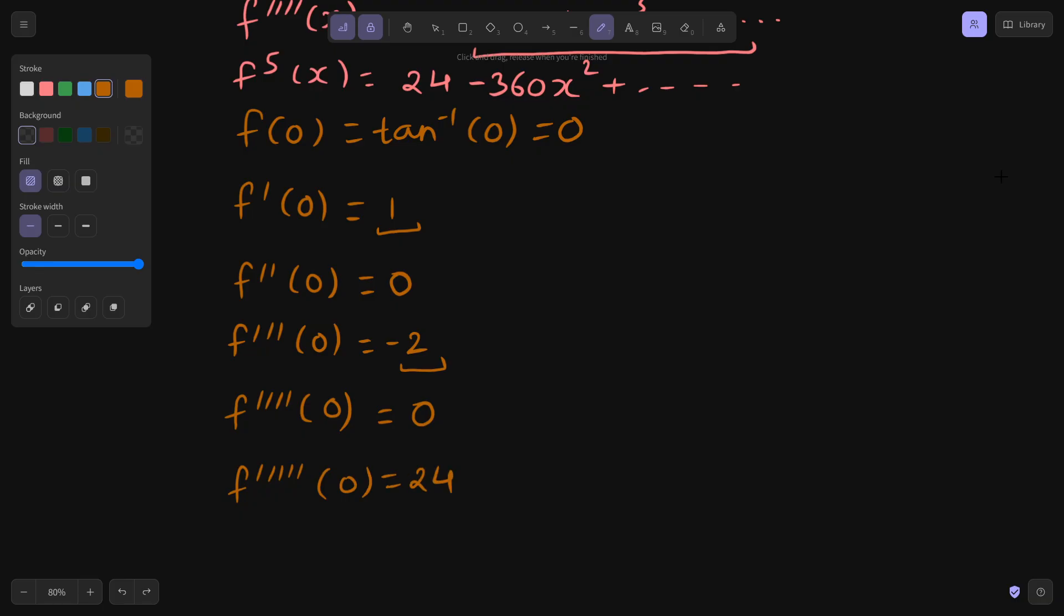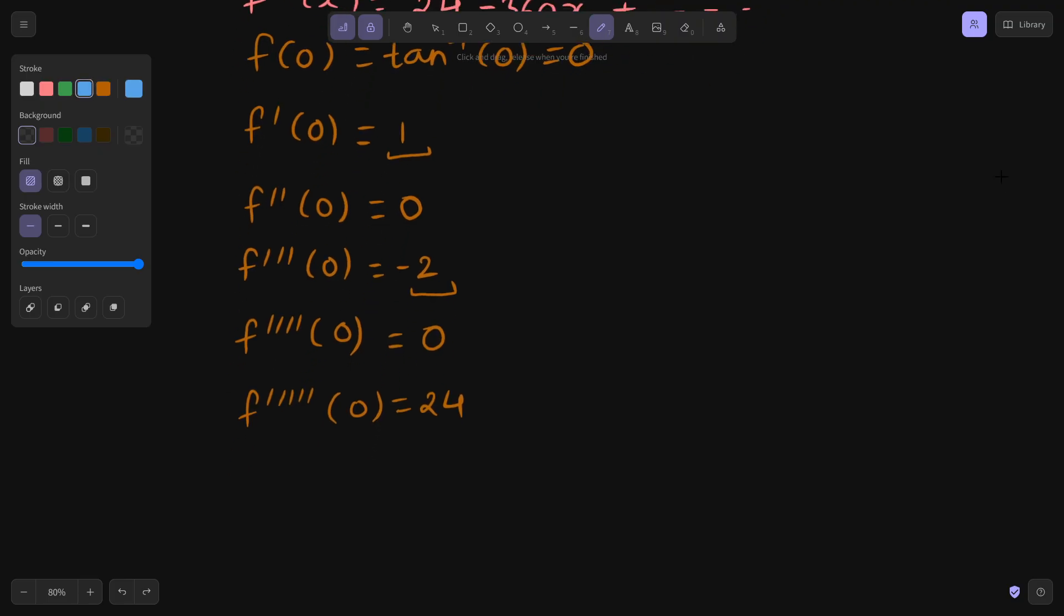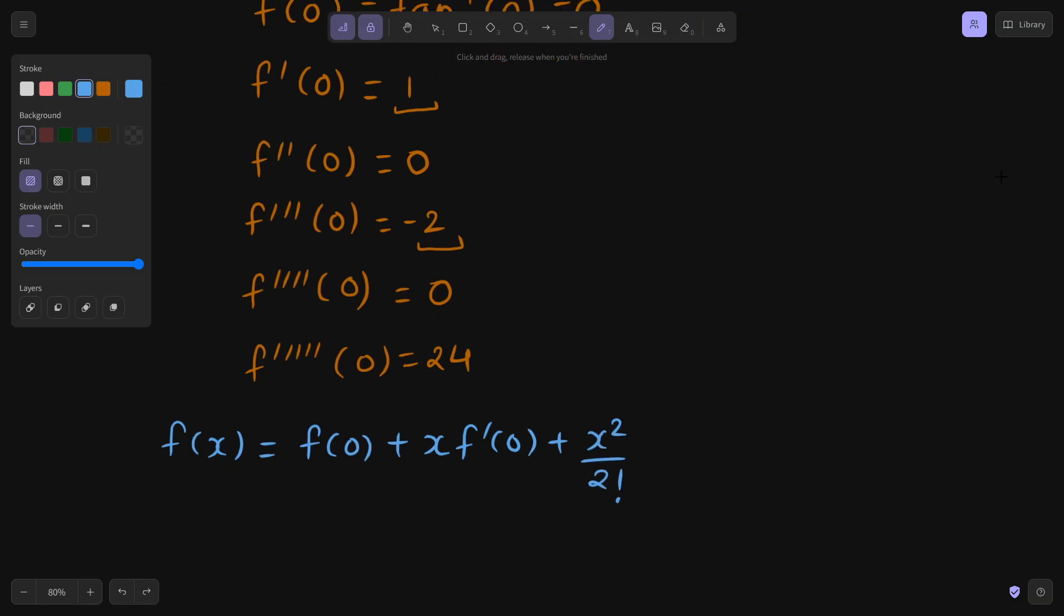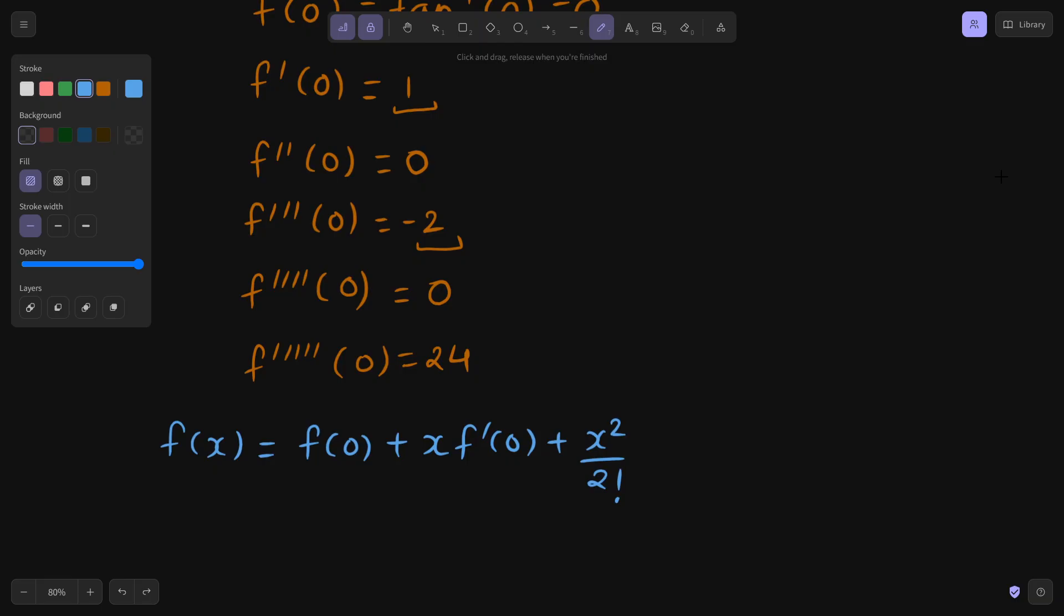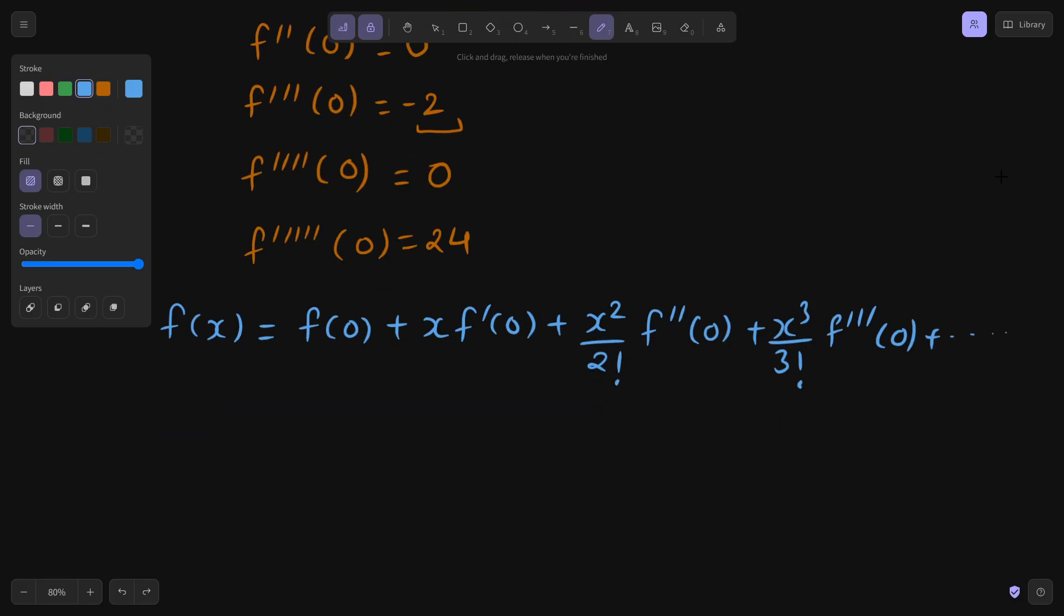So I am all set to write the Maclaurin's theorem result which is f(x) equals to f(0) plus x f'(0) plus x² by 2 factorial f''(0). I hope you know how to remember this. Whatever is the power of x, same factorial and same order of derivative. So in first term power of x is 0, so 0 factorial divided by 0 factorial which is 1 and 0 derivative is the function itself at 0. Then the first derivative divided by 1 factorial. Here again f double dash 0 plus x³ by 3 factorial f triple dash 0 and so on. Although I need more terms. I will go up to fifth derivative.